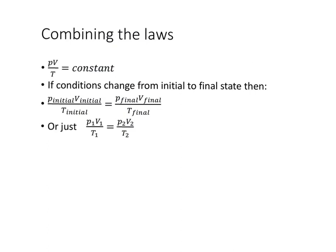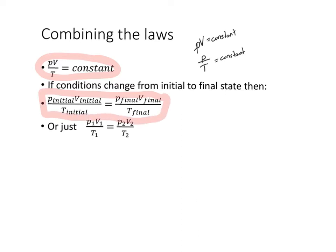Now that we've seen PV equals a constant and P/T equals a constant, we can combine them to say PV/T equals a constant. If we have the same amount of gas and change pressure, volume or temperature from an initial to final state, we get P₁V₁/T₁ = P₂V₂/T₂.